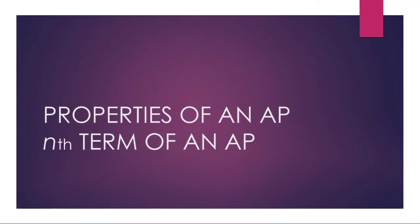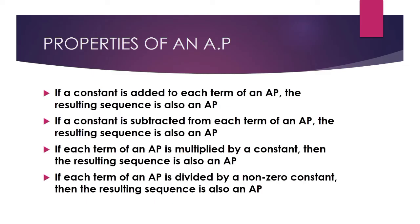The first property of an AP: if a constant is added to each term of an AP, the resulting sequence is also an AP or arithmetic sequence. Second property: if a constant is subtracted from each term of an AP, the resulting sequence is also an AP.